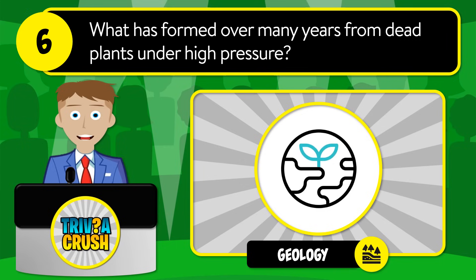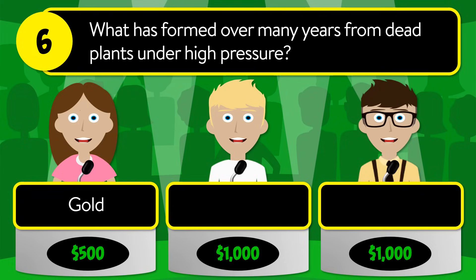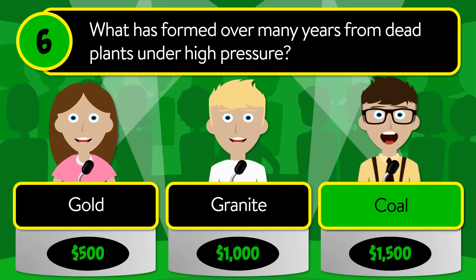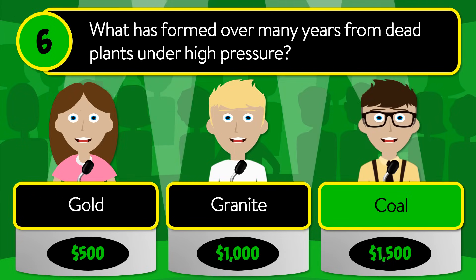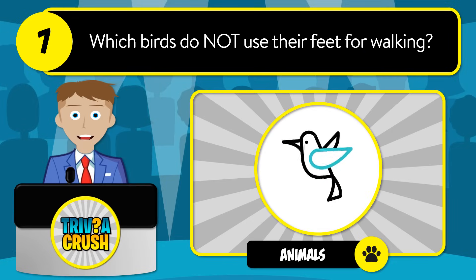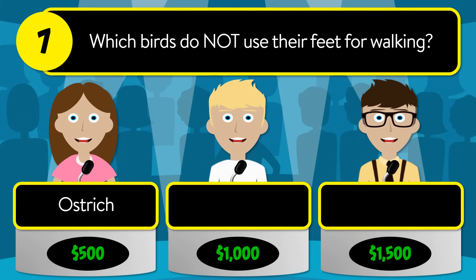Is it gold, granite, or coal? The correct answer is coal. Question number seven: which birds do not use their feet for walking? Is it ostrich, hummingbird, or swan?